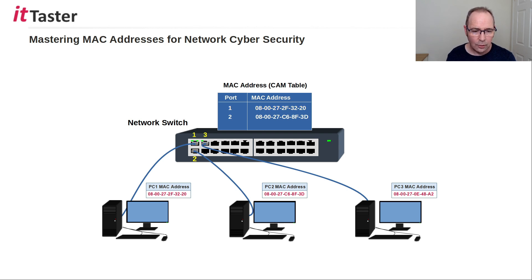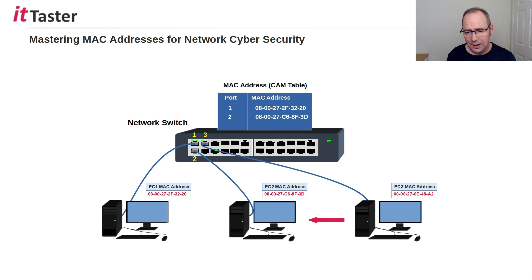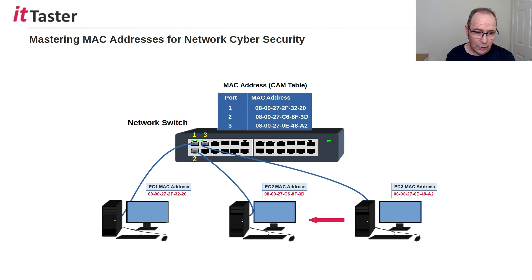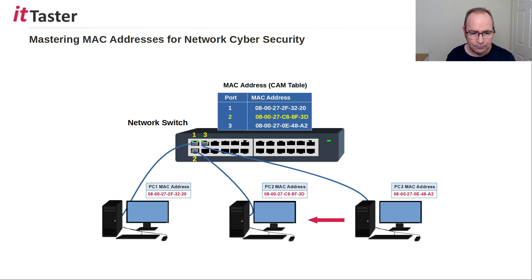Let's look at one more example. PC3 needs to communicate with PC2, and the same thing happens again. The switch examines the source MAC address and updates its MAC address table. The switch needs to forward the frame, so it checks its MAC address table — and there is an entry for PC2's MAC address and the port number associated with it. The frame is then sent out of port 2 to PC2.